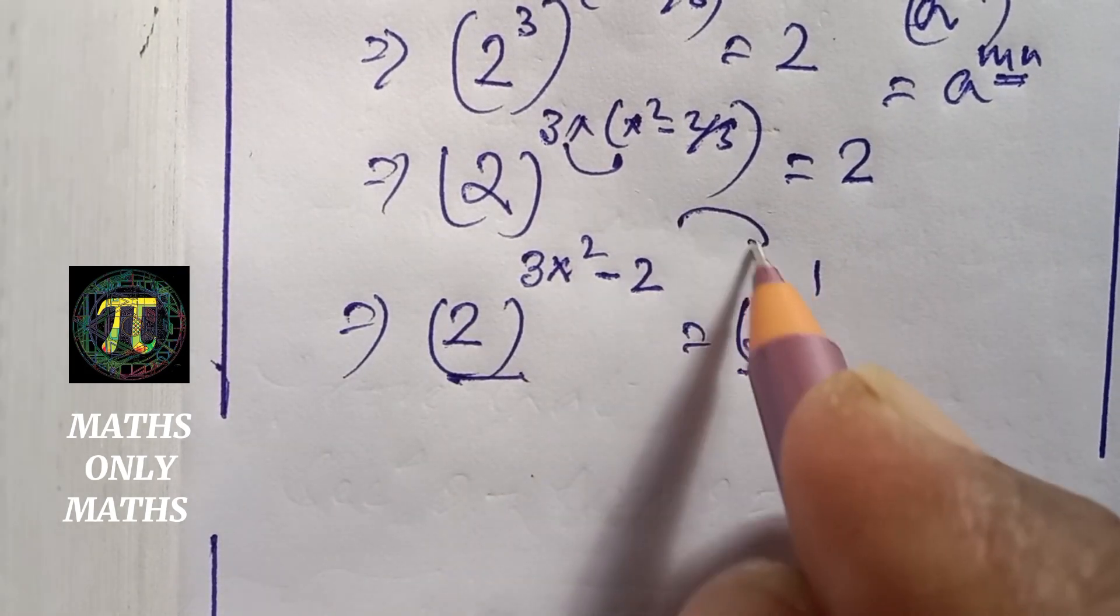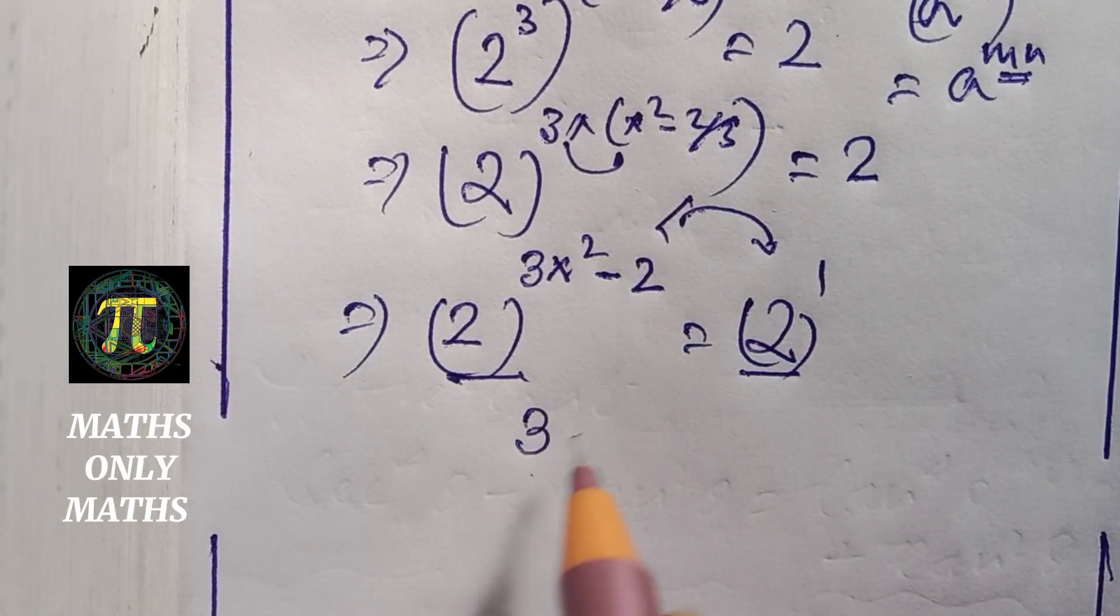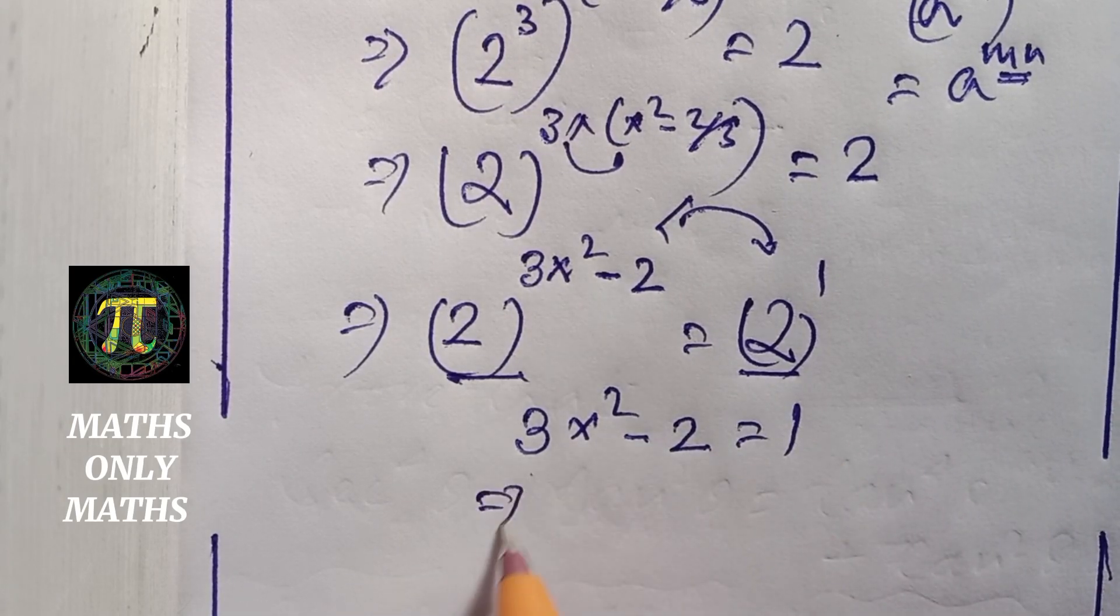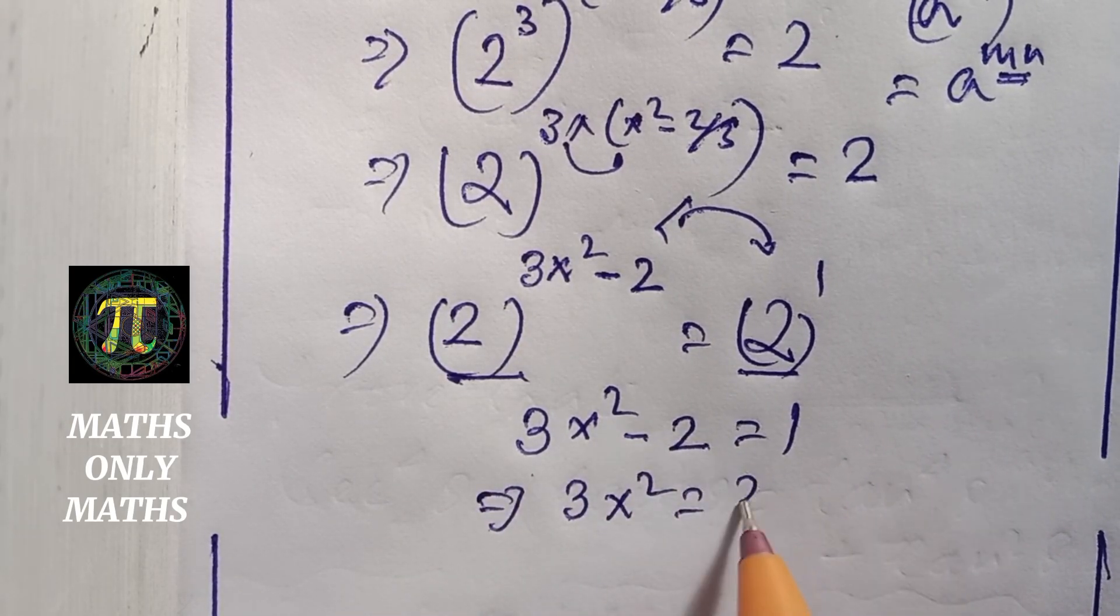Bases are equal, therefore powers will be equal. I get 3x squared minus 2 equals 1, or 3x squared equals 3.